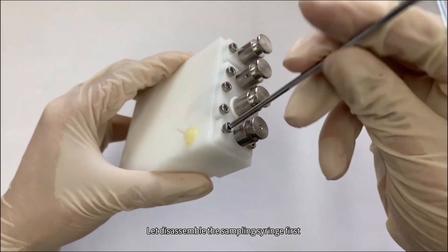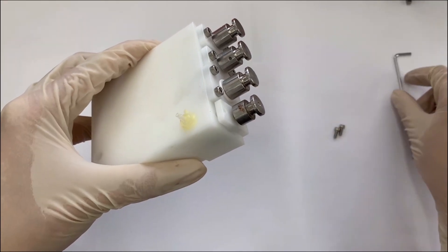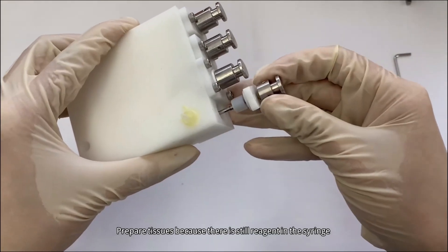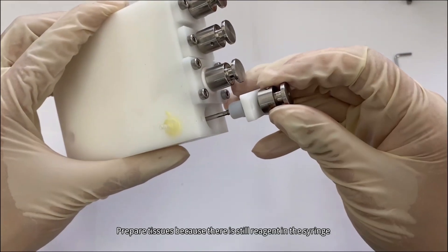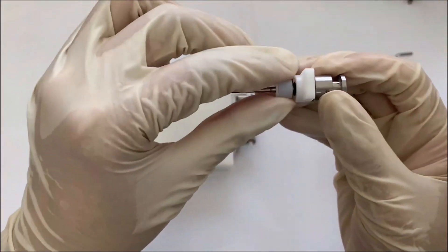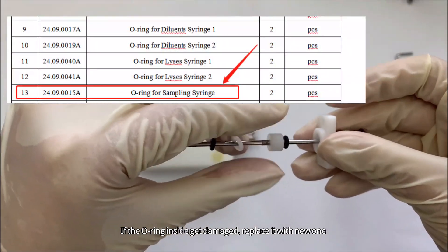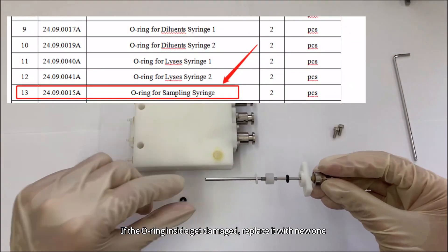Let's disassemble the sampling syringe first. Prepare a suit because there is still reagent in the syringe. If the O-ring inside gets damaged, replace it with a new one.